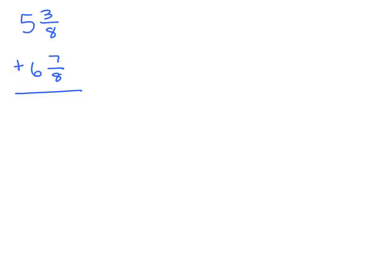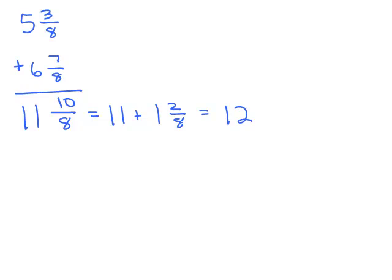For the last problem, try it on your own and write your answer as a mixed number, making sure it's reduced. Since it's written as mixed numbers, I'll add the whole number parts together, and with the common denominator of 8, add 3 and 7 to get 10 eighths. This is not reduced and it's also an improper fraction — you never want to mix a whole number with an improper fraction. So that means 11 plus 10 eighths. Change that to a mixed number: 1 and 2 eighths, giving 12, and then reduce 2 eighths to 1 fourth — so 12 and 1 fourth.